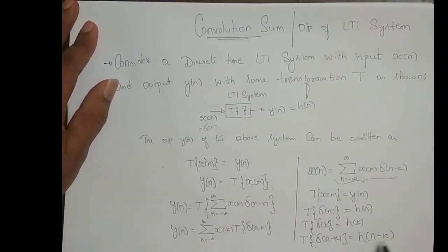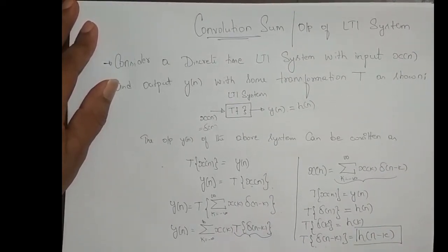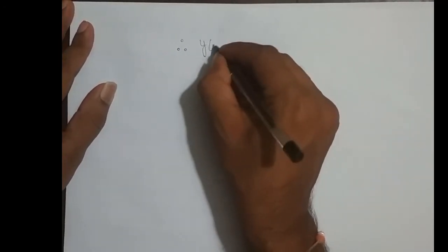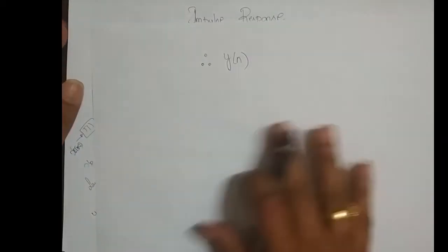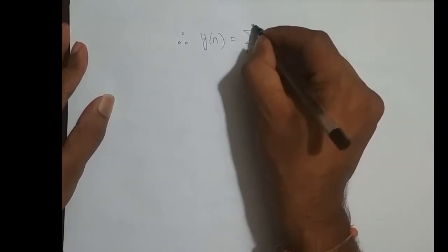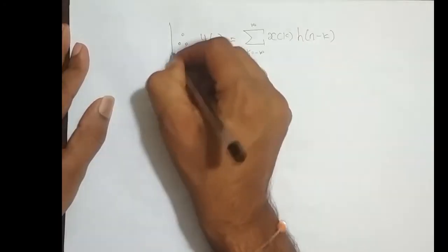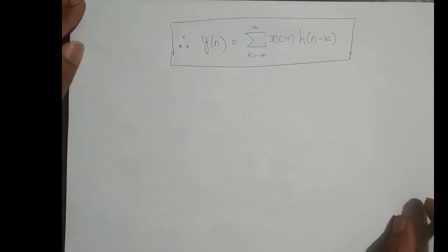Just replace K by n minus K. So instead of writing T{delta[n minus K]}, we can write H[n minus K]. Therefore, Y[n], the output of the LTI system, is equal to the summation over K from minus infinity to infinity of X[K] times H[n minus K].